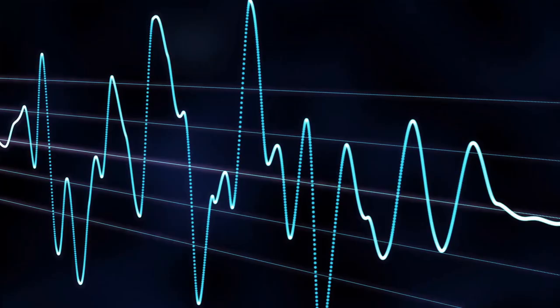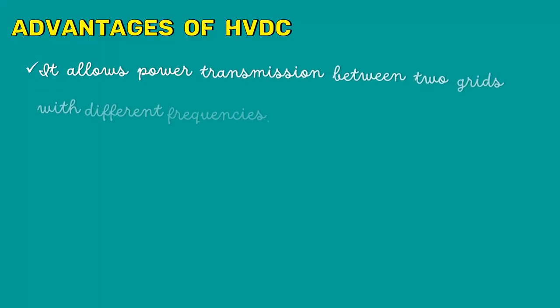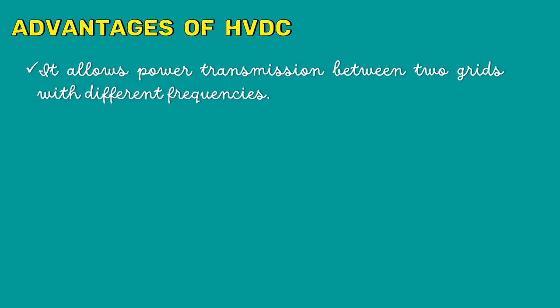If a country generates surplus electricity, they trade and share electricity with neighboring countries. The main thing to consider is that the two countries sharing electricity should have the same frequency. HVDC is very useful here because in DC, frequency is zero, so we don't have to worry about frequency matching. The first advantage of HVDC is that it allows power transmission between two grids with different frequencies.